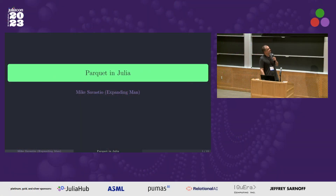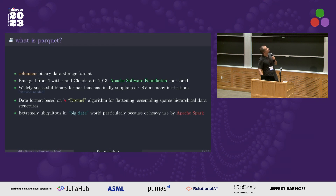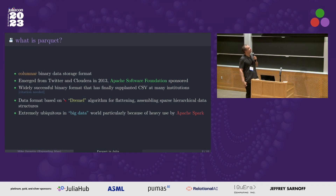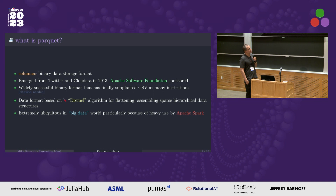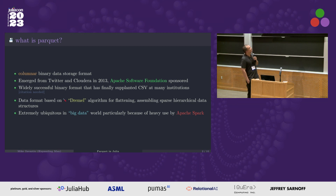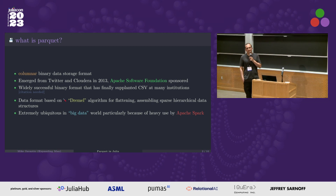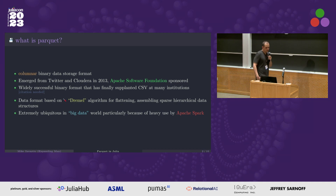I'm going to talk about Parquet, mostly my package, Parquet2, because this is very short. For anybody who's not already aware, Parquet is a columnar binary data storage format. It's been around about 10 years or so, and it's very popular and widely used in certain circles. In particular, if you're doing big data stuff, Apache Spark and that kind of thing, it's probably outputting Parquet all over the place. It's arguably finally the thing that's supplanted CSV at a lot of institutions.